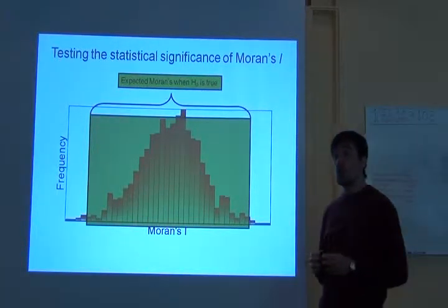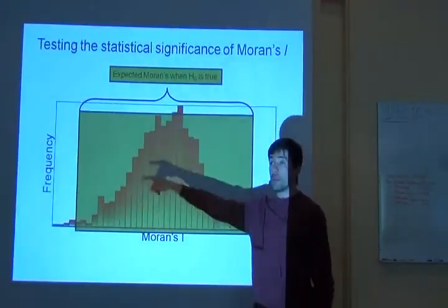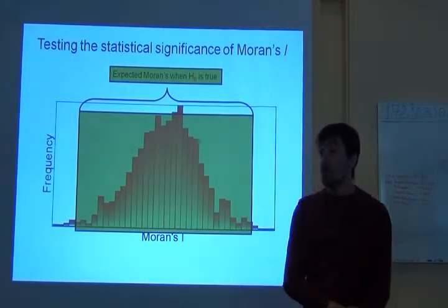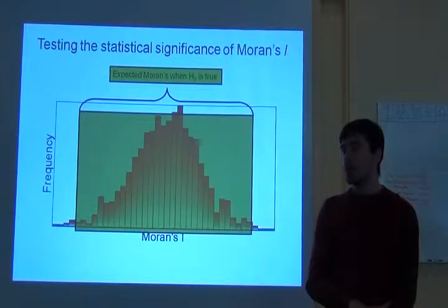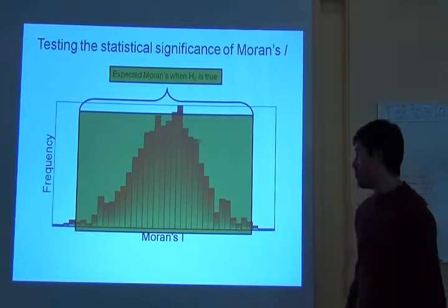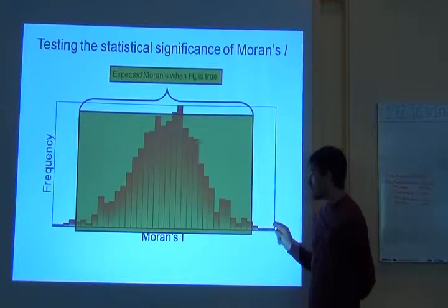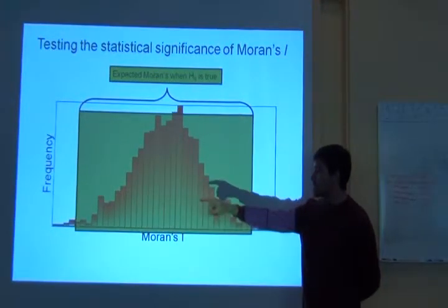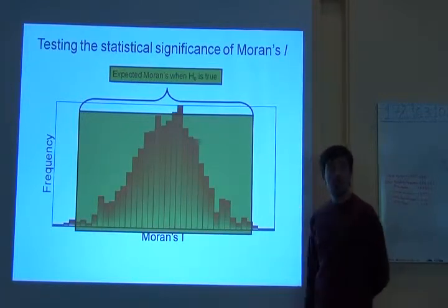So the Moran's I value being somewhere in this zone here will tell you that the level of spatial autocorrelation you have is not much different from the level of spatial autocorrelation you would expect in a world that is totally random. But suppose the Moran's I value you got is right on the tails — this is positive Moran's I and that is negative Moran's I. Suppose the Moran's I value you got is right here or maybe even further. What's your conclusion?